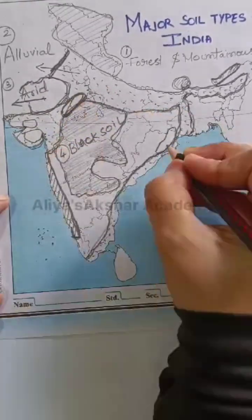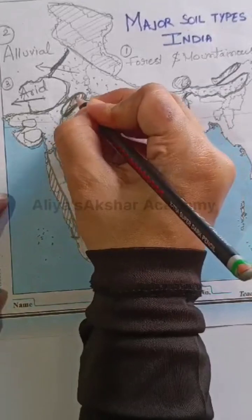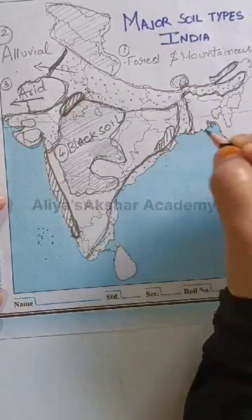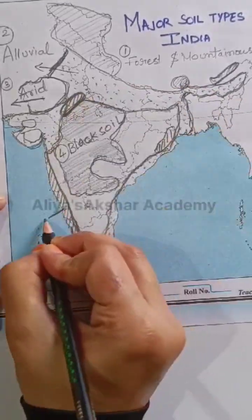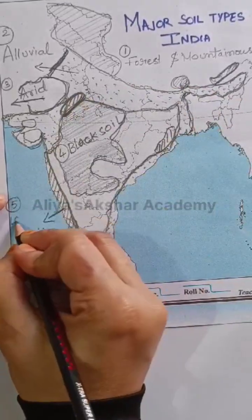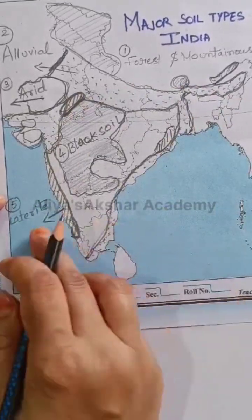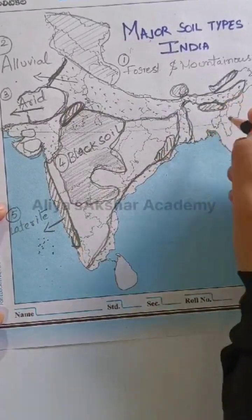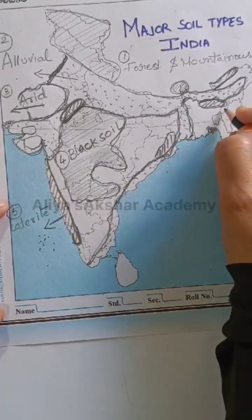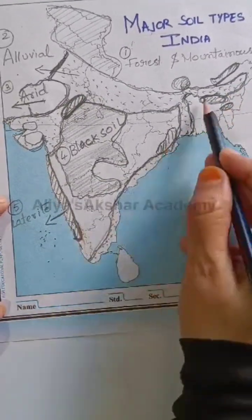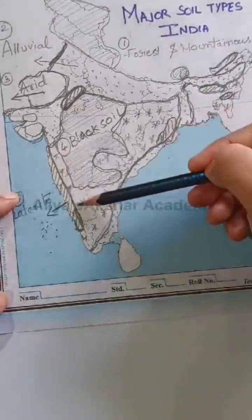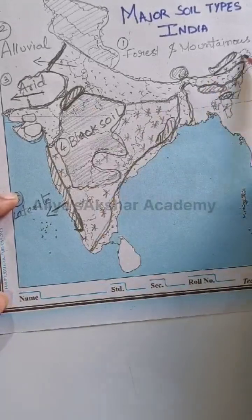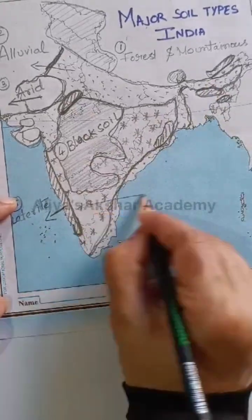Some other regions next to the arid soil — the Meghalaya region, Assam, and Odisha — also have distinct soil types. The remaining region in the southeast and extreme northeast has red and yellow soil.